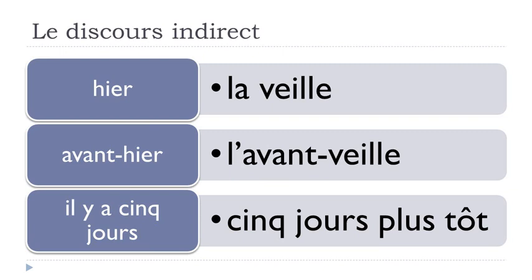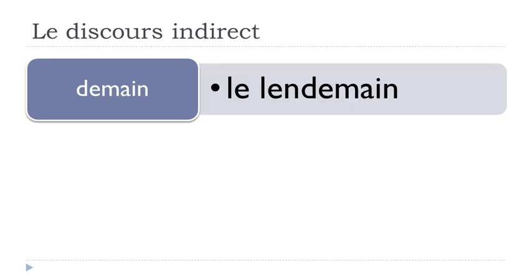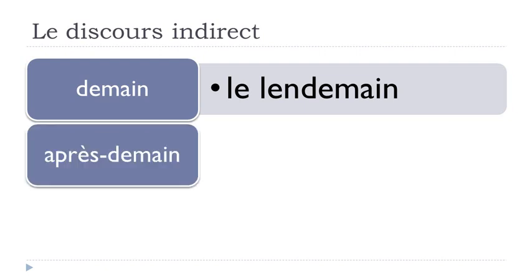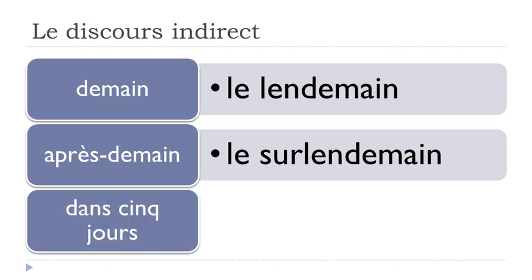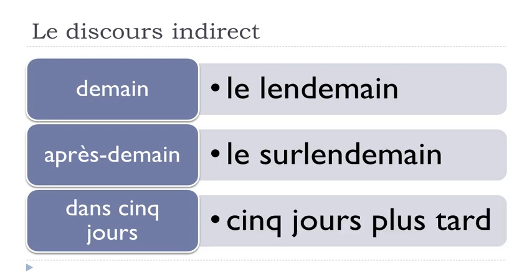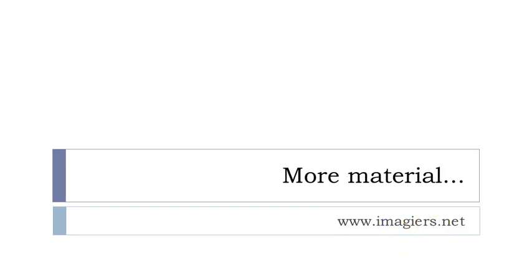Continuing: demain (tomorrow) becomes le lendemain (the following day). Après-demain (after tomorrow) becomes le surlendemain. Dans cinq jours (in five days) becomes cinq jours plus tard (five days later). Keep in mind: demain → le lendemain, après-demain → le surlendemain, dans cinq jours → cinq jours plus tard. That was it — simple and short. If you want more videos: youtube.com/imagier and imagier.net. Have a great day, bye-bye.